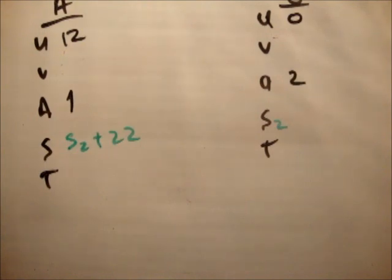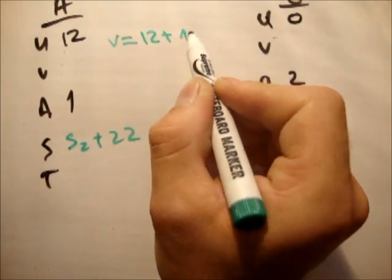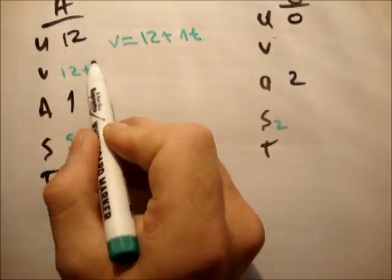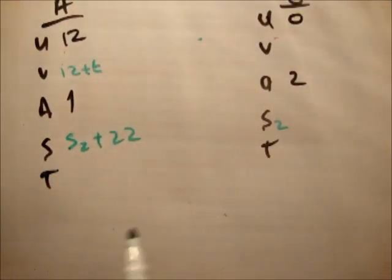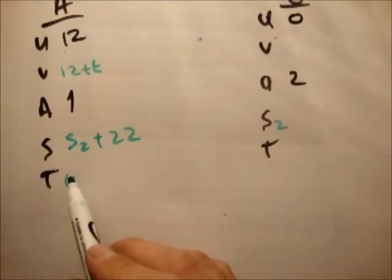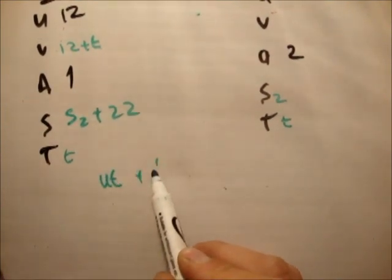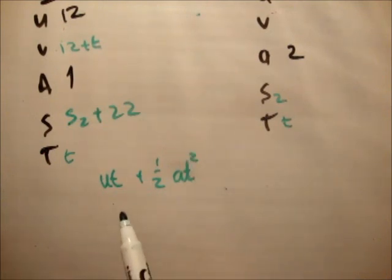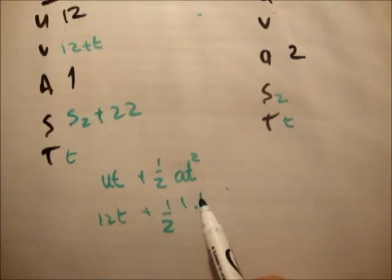So next we'll use V is equal to U plus AT. So V is equal to 12 plus 1 times T. So it's 12 plus T, like that. S is equal to U plus V over 2 times T. But in this case, I'm actually going to use S is equal to UT plus 1 half AT squared. So it's equal to 12T plus 1 times T squared. So it's 12T plus T squared over 2.